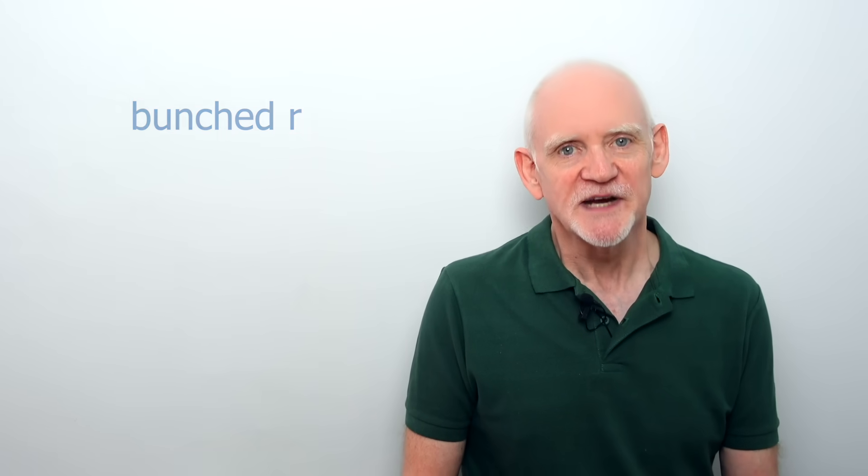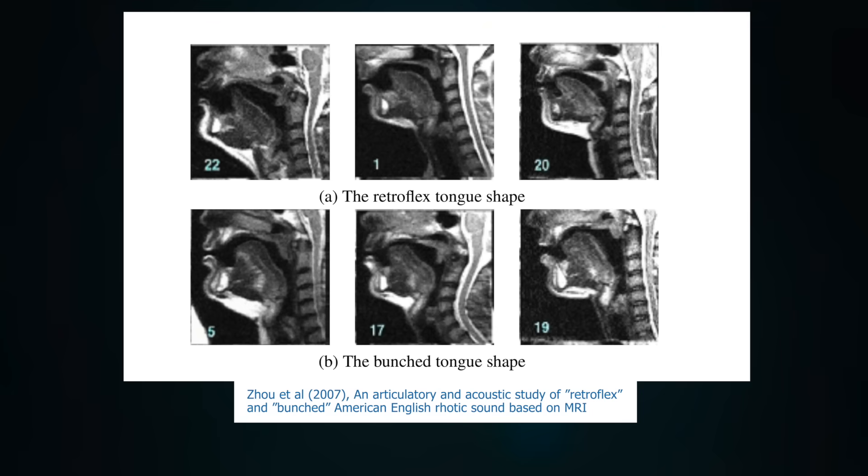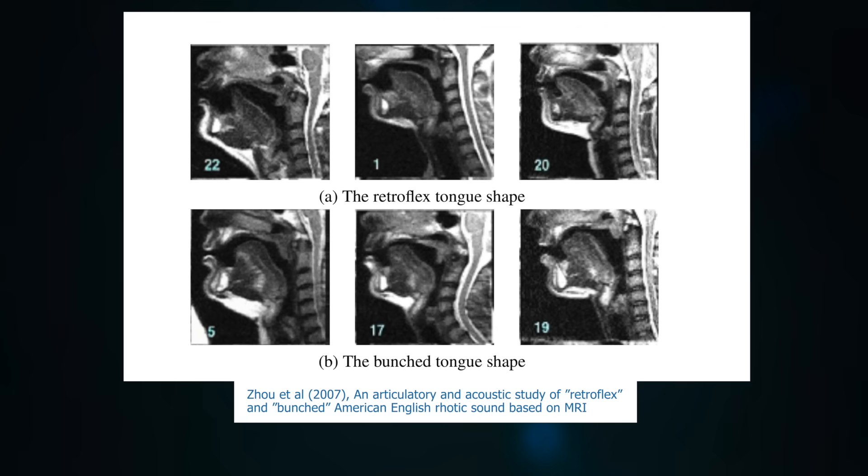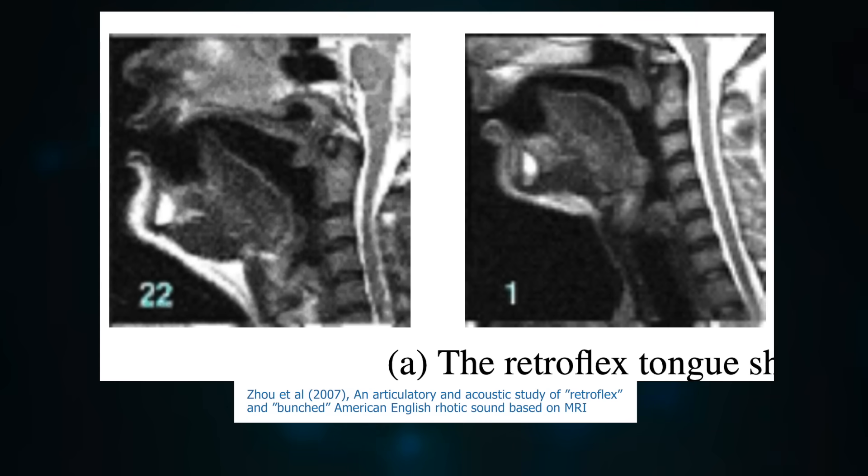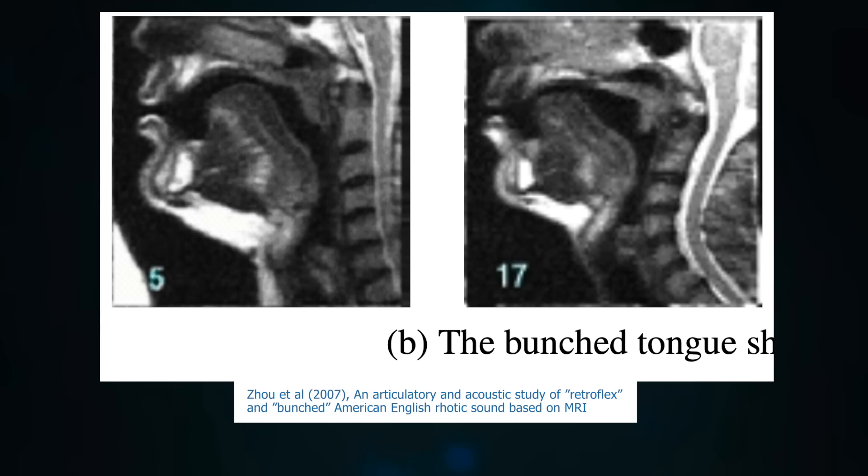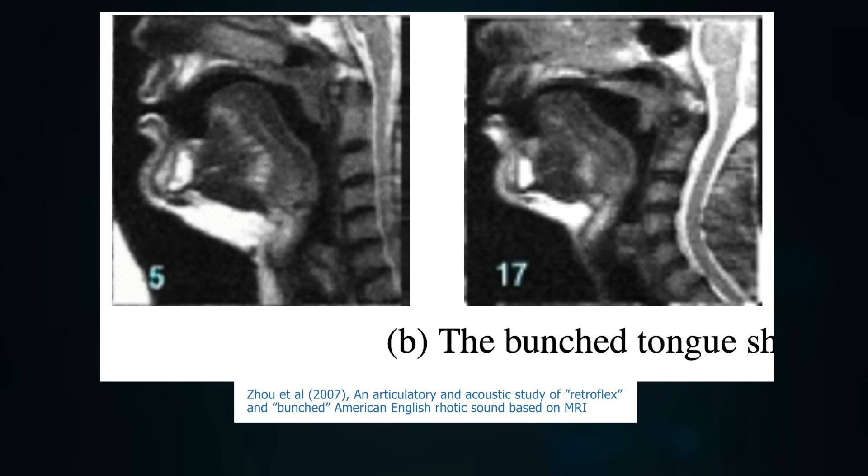Backing up a bit, the characteristic English R sound can be articulated in two main ways. One has the tongue body relatively low in the mouth and the tip of the tongue curled up. The other has the tongue body bunched up, more like a typical vowel. And this, more or less, is what the new Australian goat is gliding to or towards.